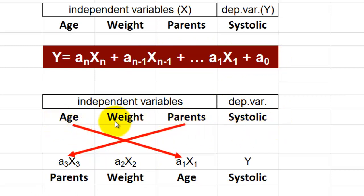When we analyze this, we have to realize that the formula we are going to use considers the last independent variable as the first one here, weight second, and age third, and then the systolic blood pressure.